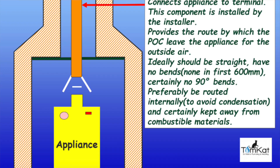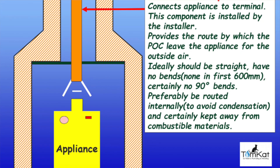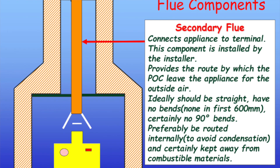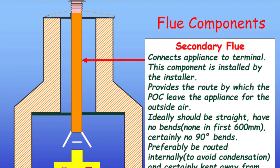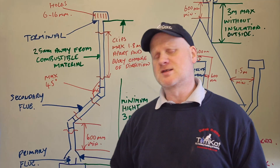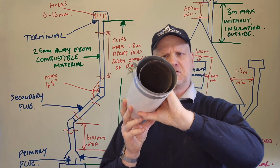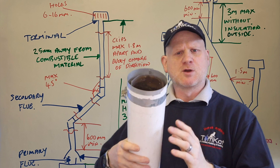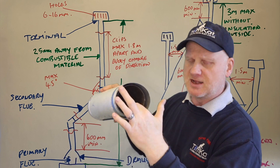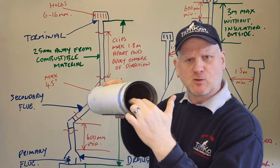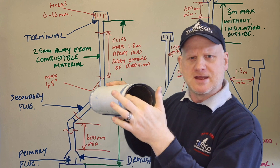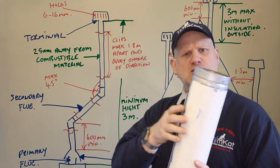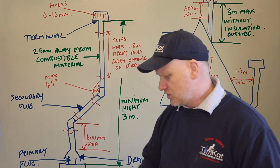Coming off the draft diverter, the next part of the flue system is the secondary flue — your twin wall flue system. We call it twin wall because the internal part carries the products of combustion, and the external part is an air gap so it stops you getting burnt when you touch it.